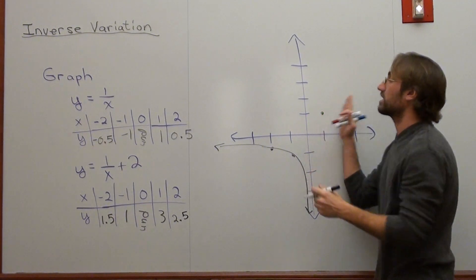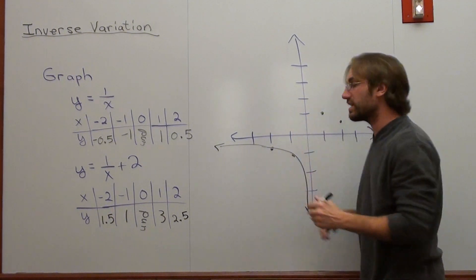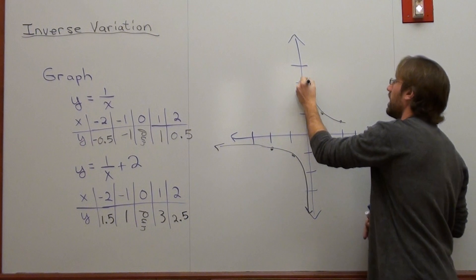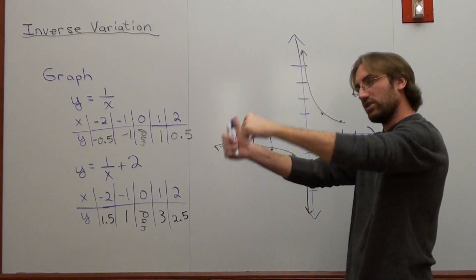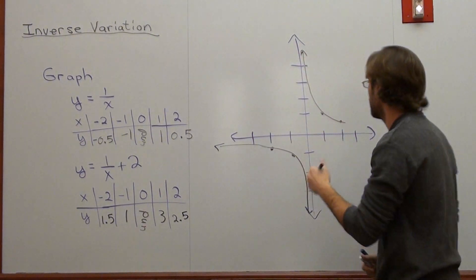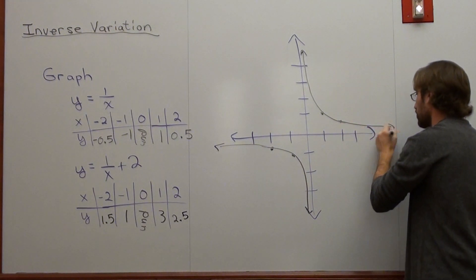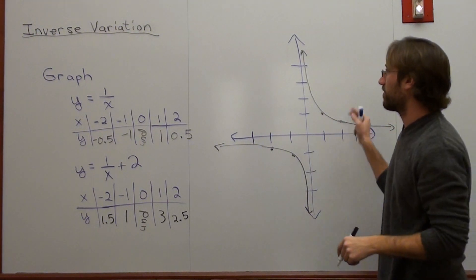Graph these. As it gets closer to 0 from the right side, the values for y are going to go up and up and up. And as the x values get higher or go to the right, the y value is going to get closer and closer to 0. So that's the graph for the first one.